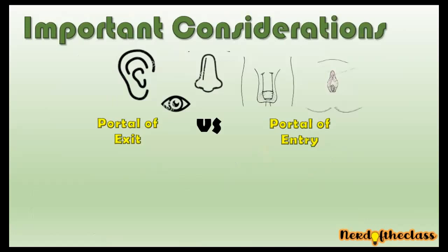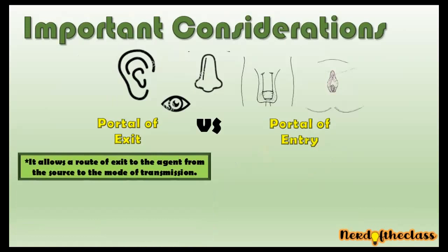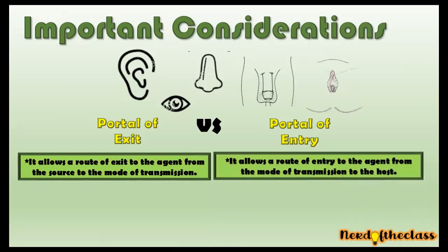An important consideration: the portal of exit allows a route of exit from the agent to the mode of transmission, and the portal of entry goes from the mode of transmission to the susceptible host. The sequence is important — first goes the portal of exit, then the portal of entry. The agent first has to go out from the source, and then it has to enter the host.